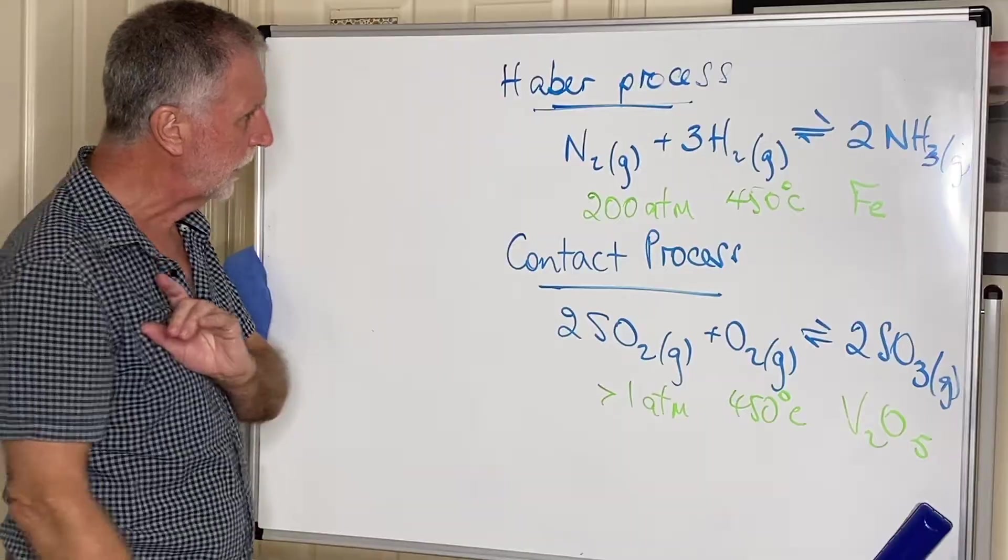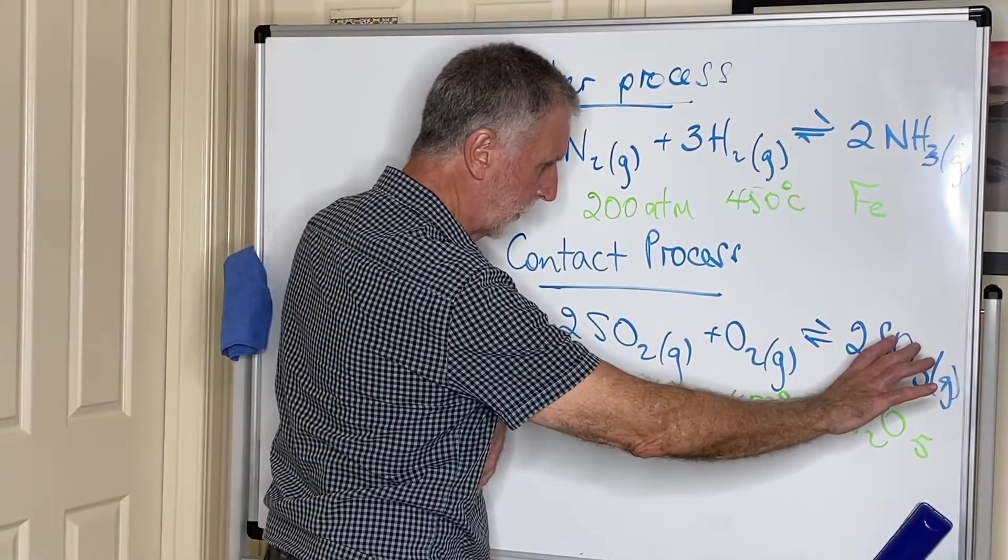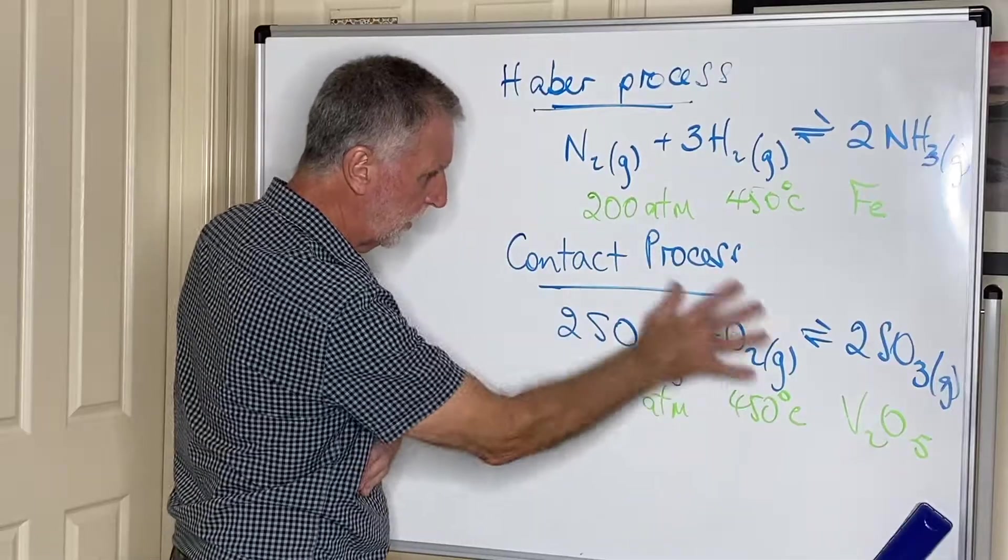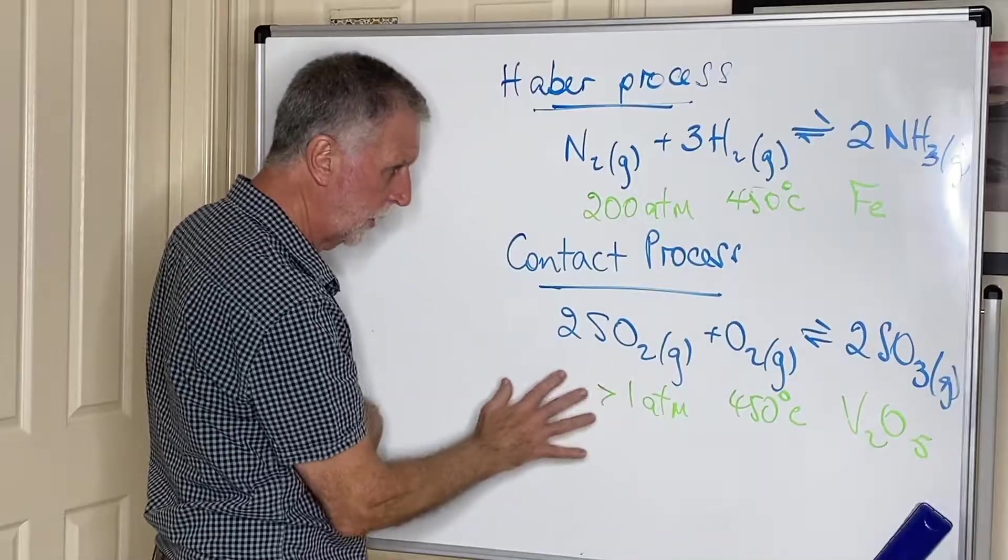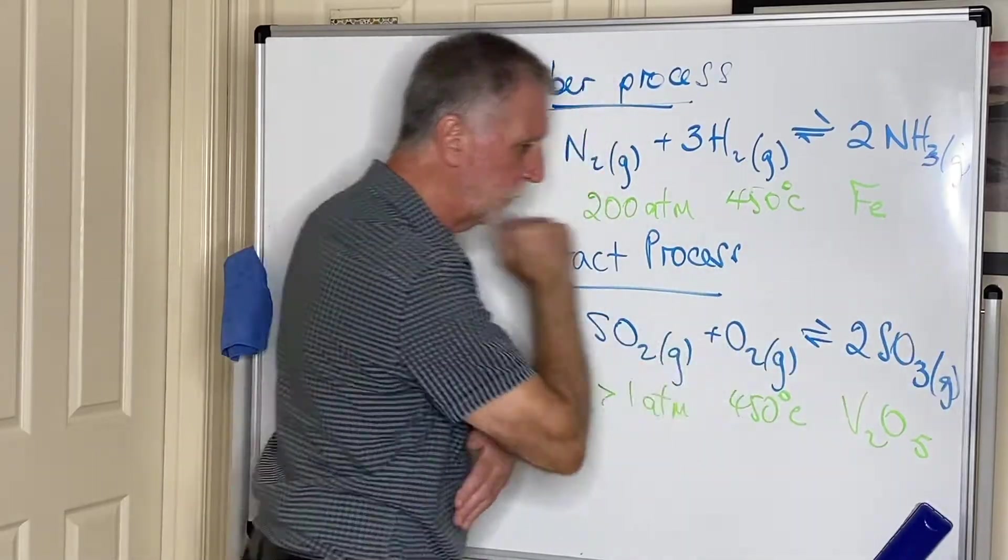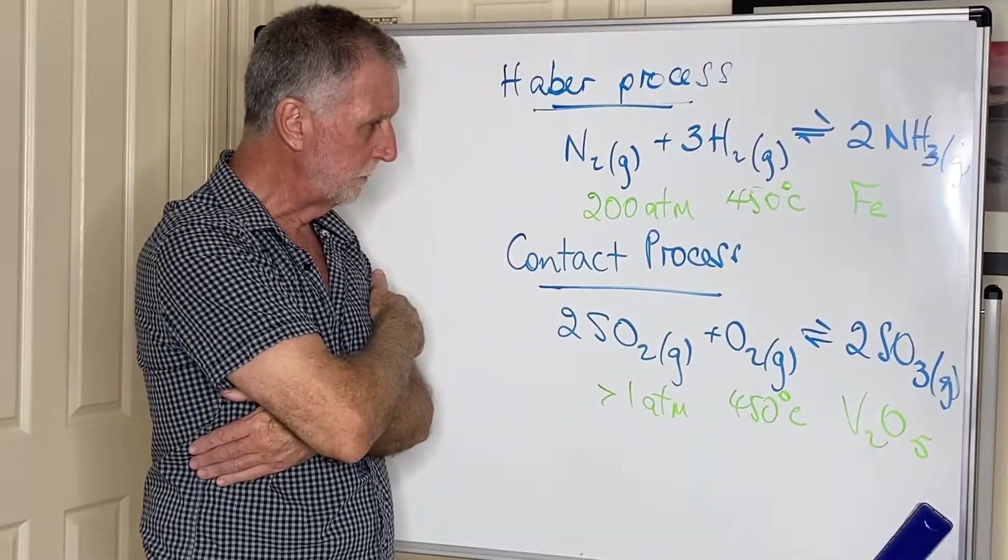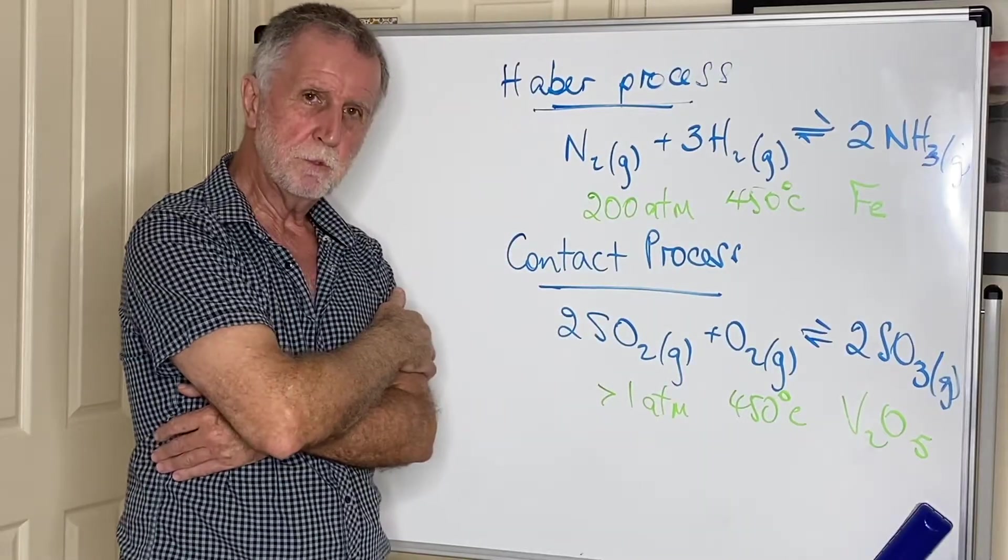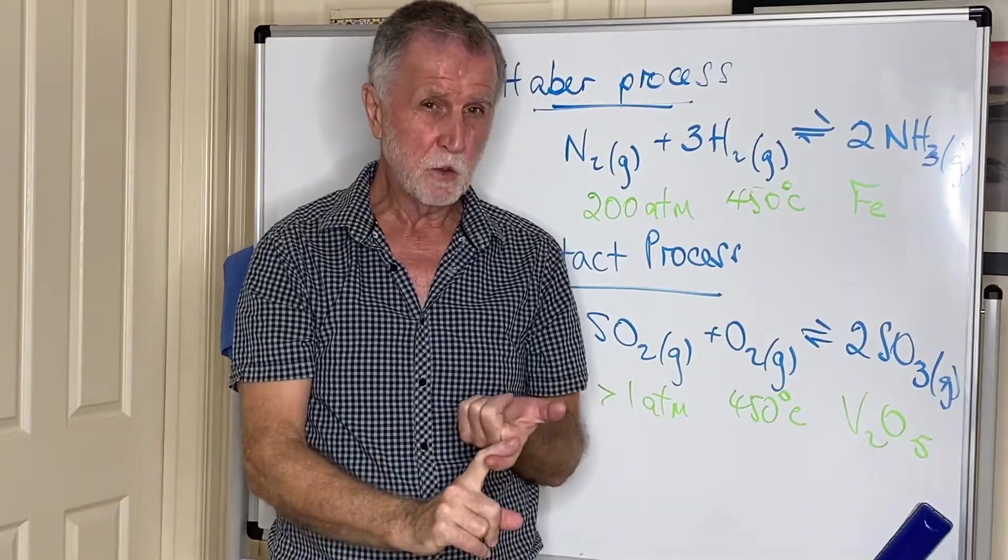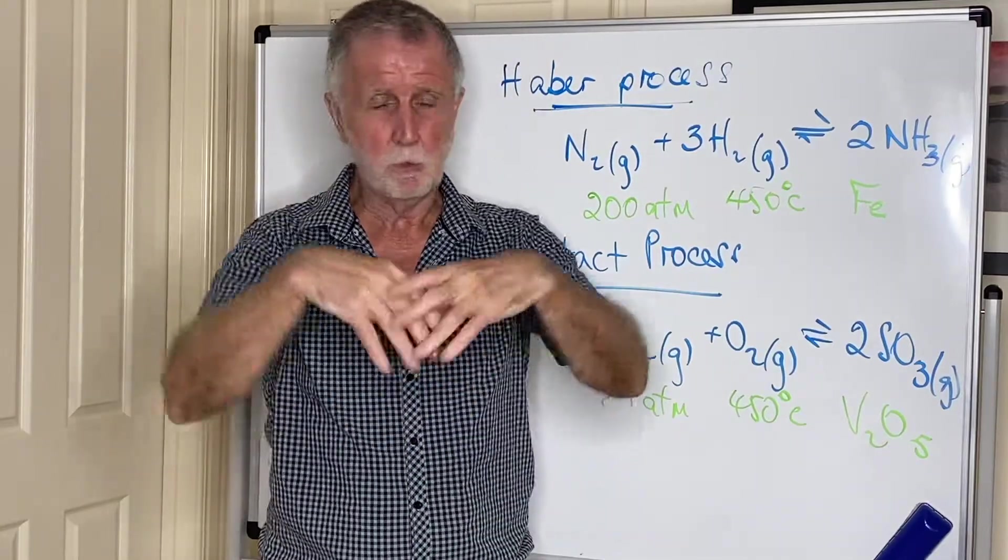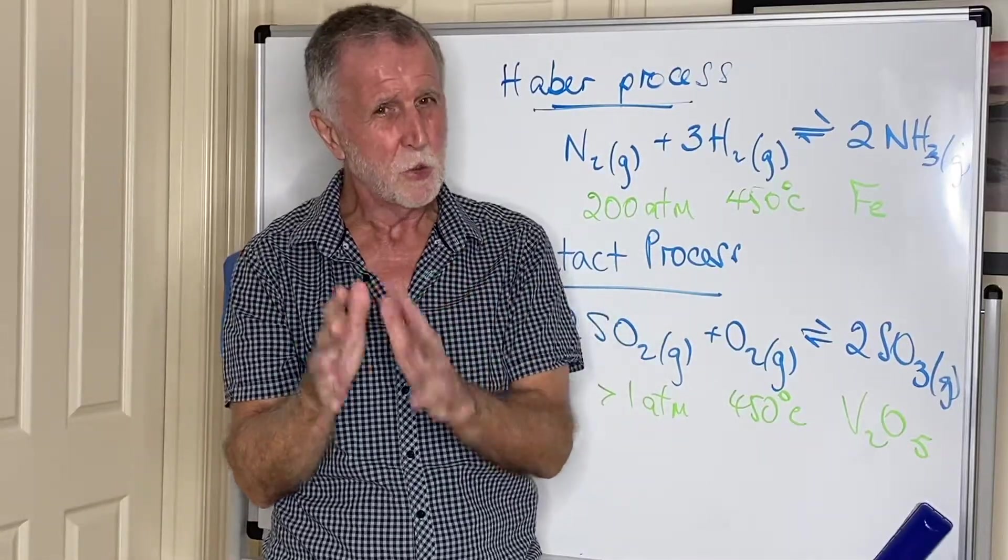The same argument applies for the Haber process as to the Contact process. There are three lots of gas on the left and two on the right, so a high pressure would obviously favor the forward reaction and get a better yield of sulfur trioxide. So why don't we use it? Well, firstly, pressure is very expensive, and two, prone to burst pipes and stuff like that. So you don't use a high pressure unless you have to.